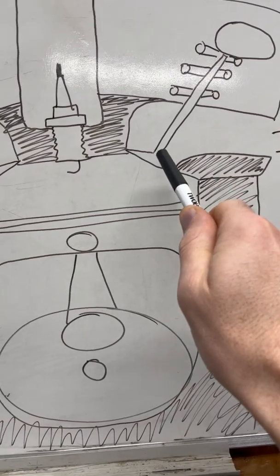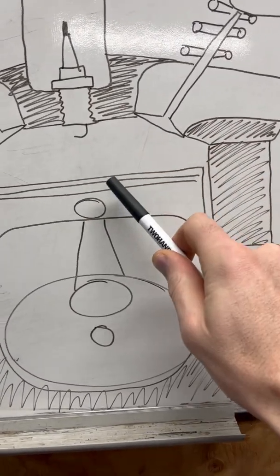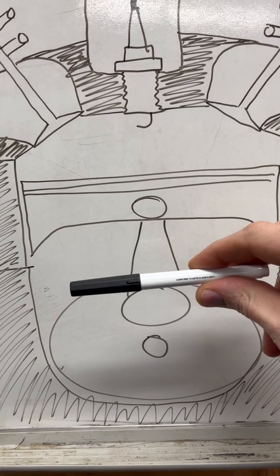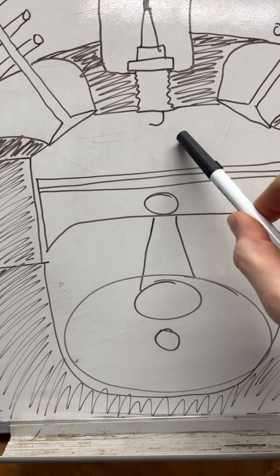This valve opens and allows air and fuel into the combustion chamber as the piston is coming down. That's what's sucking it in. Then when the piston reaches roughly bottom dead center, the intake valve closes and the piston comes up compressing those gases.